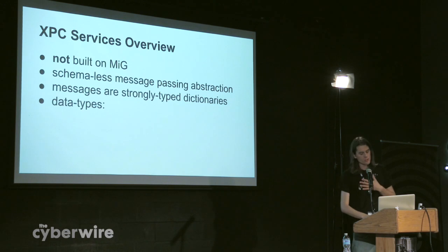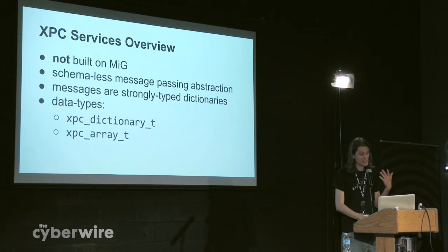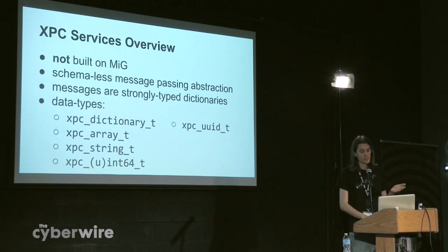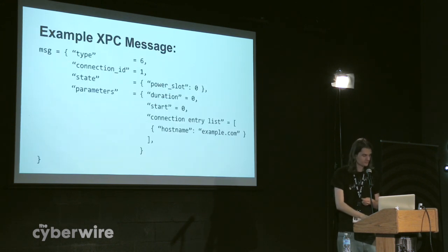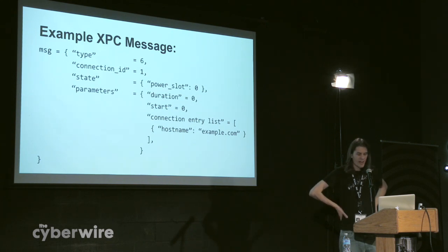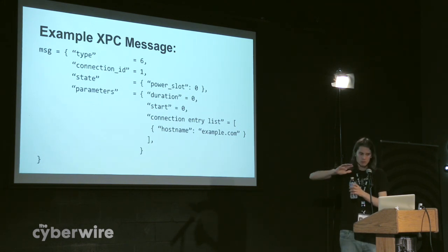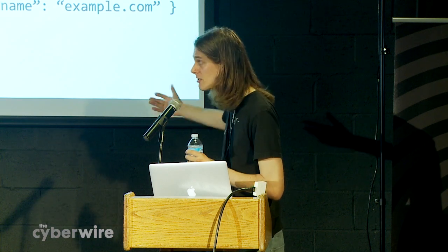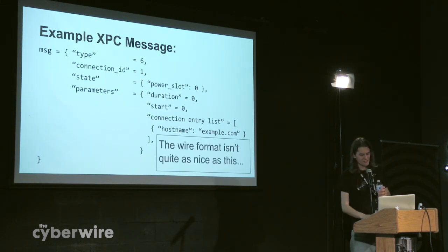From the XPC documentation, you can find out that it is a schema-less message passing abstraction. Unlike MIG, which has a strongly typed definition for what every message must contain, XPC has nothing like that — there is no centralized schema for a service. Messages are strongly typed dictionaries — not CoreFoundation dictionaries, they have new XPC dictionaries. There are a bunch of data types you can put in these XPC dictionaries: another XPC dictionary, XPC array, XPC strings, integers, UUIDs, data (which just lets you wrap raw bytes), dates, and bools.